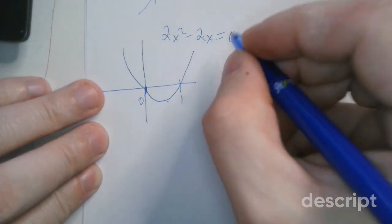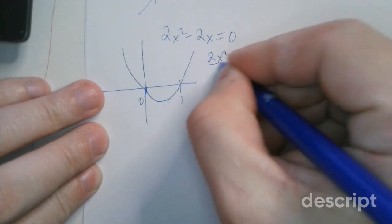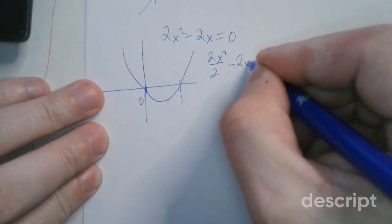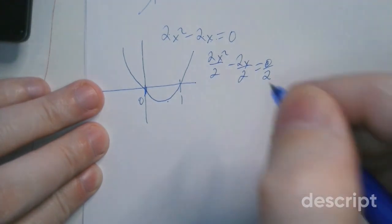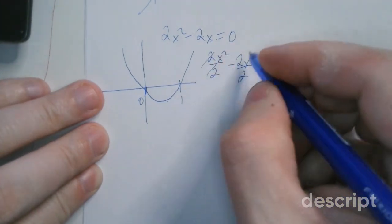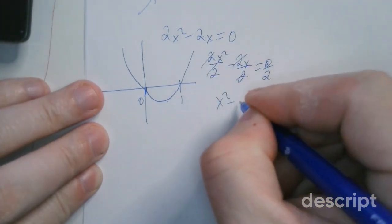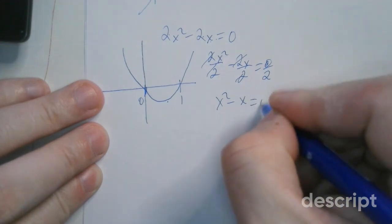Okay, so then you can divide the two away to see what happens. That's allowed. So you can do 2x squared divided by 2 minus 2x divided by 2 equals zero divided by 2. So you simplify, these cancel. So you have x squared minus x equals zero.